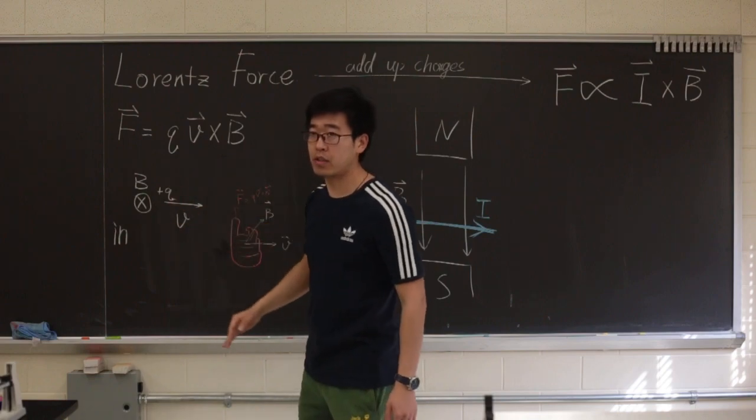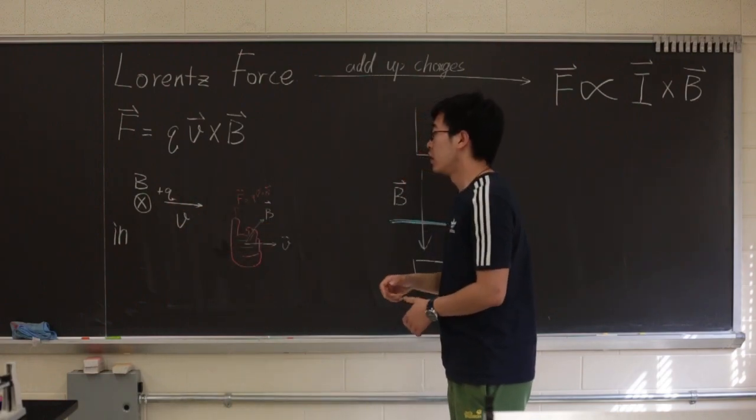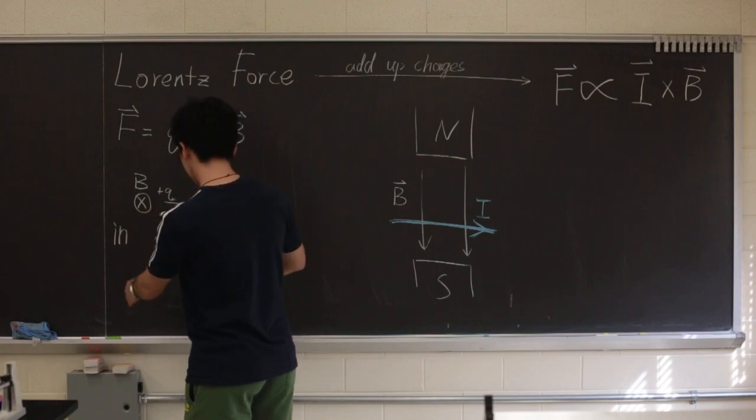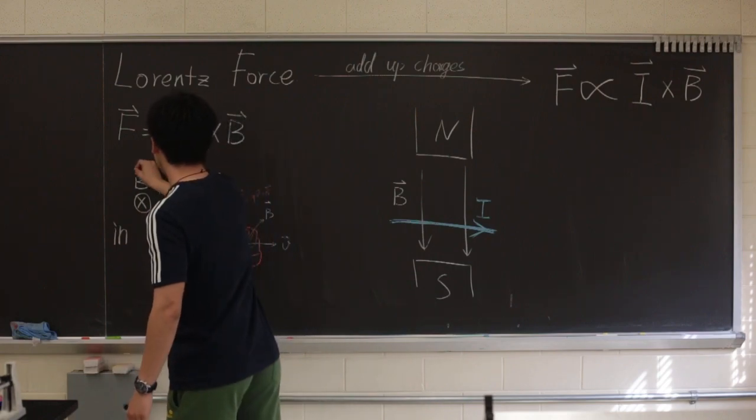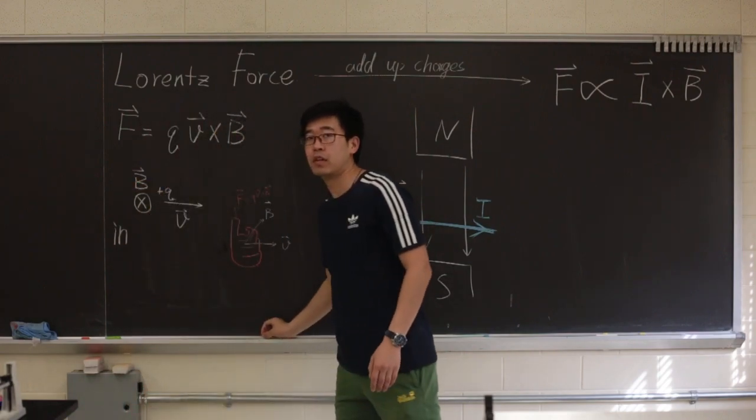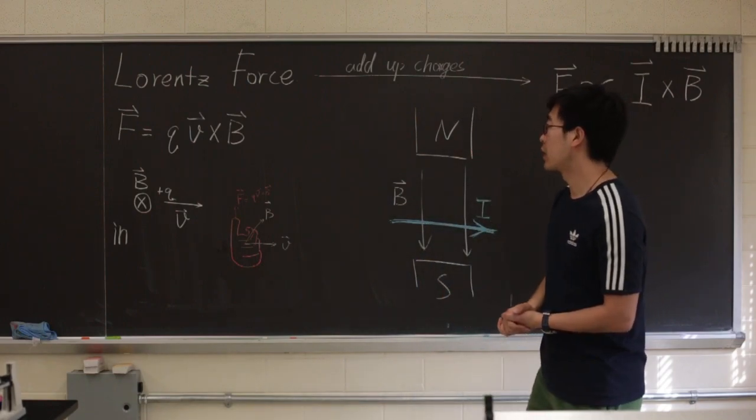So the cross product, basically you take those two quantities, the vectors, and use right-hand rule to determine the orientation of it. And technically,